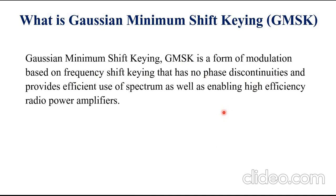This Gaussian Minimum Shift Keying is basically the full title of Gaussian Filtered Minimum Shift Keying, GMSK, and it is a form of frequency modulation that is used in radio communication systems. GMSK is probably most widely associated with the 2G GSM mobile communication system, where it proved to be an effective form of modulation.